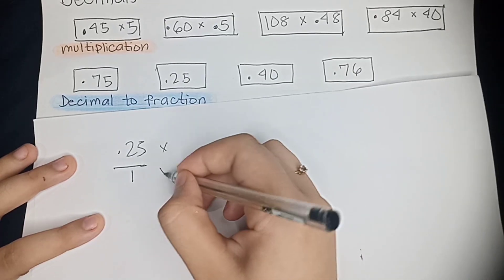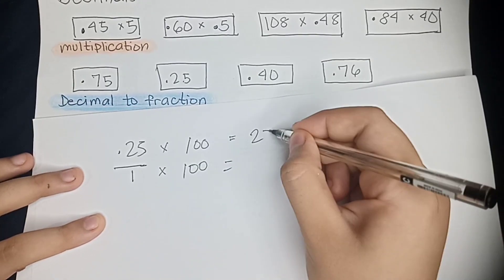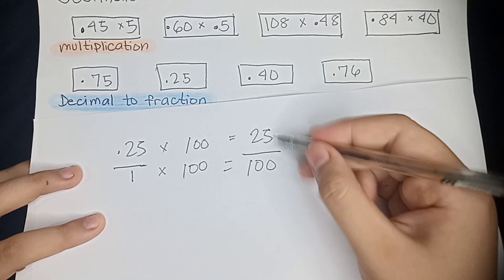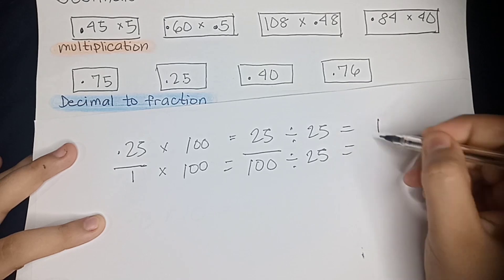Now let's move on to 0.25 over 1. Let's multiply both sides by 100. And that equals 25 over 100. And we're going to divide both sides by 25, which gives us 1 fourth.